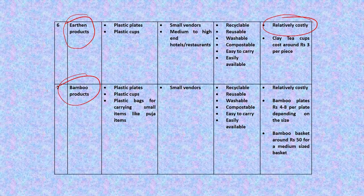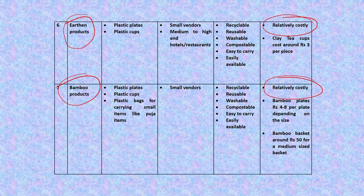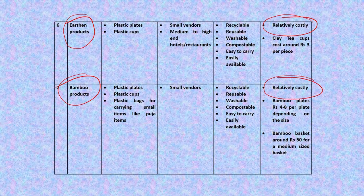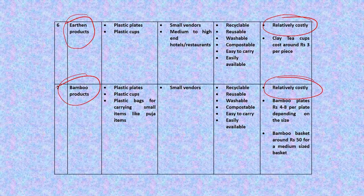A bamboo plate costs anywhere from 4 to 8 rupees per plate depending on size, and a medium-sized bamboo basket costs around 50 rupees. When introducing new materials as an alternative to plastic, we must think about cost — whether small vendors can afford to stock them and whether users are willing to pay the extra cost once the plastic ban is implemented.